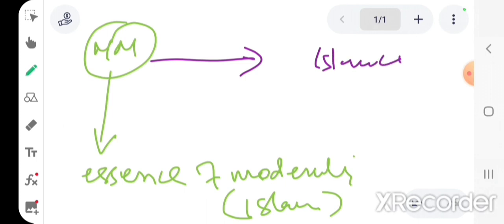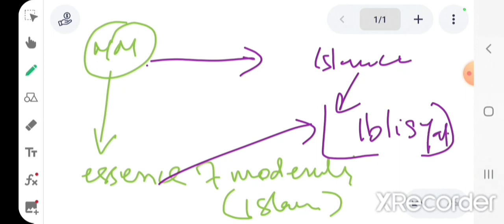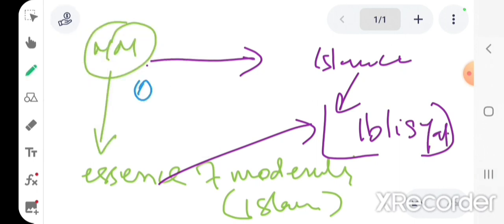For us, the Islamic position is that the modernist essence of modernity is Iblisi. Iblisi in a specific sense that it is based on the idea of transgression against Allah and its will, and that's what freedom is.